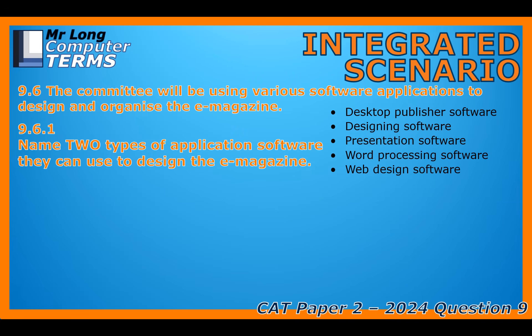Let's zoom in on a specific layout detail: to make the e-magazine look really professional, they need an image placed perfectly next to a paragraph so the text flows neatly around it with no big awkward gaps. What specific feature controls that text-image interaction? That feature is called text wrapping. It controls how the text moves or wraps around an inserted image or object, ensuring a neat, professional-looking layout instead of just forcing the text into a block above or below the graphic.